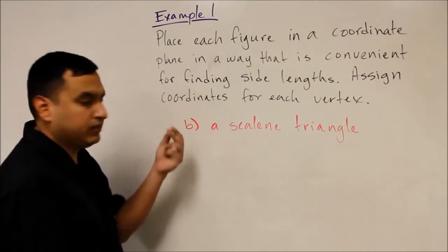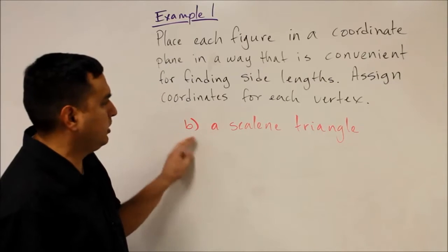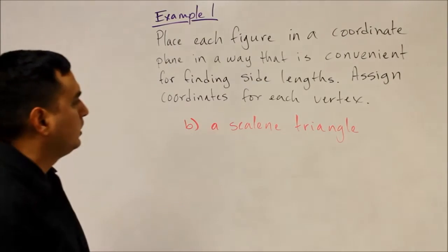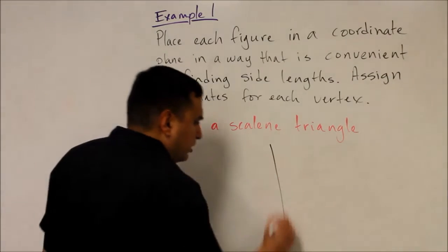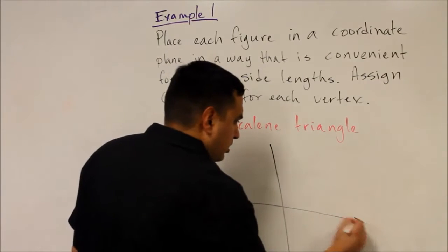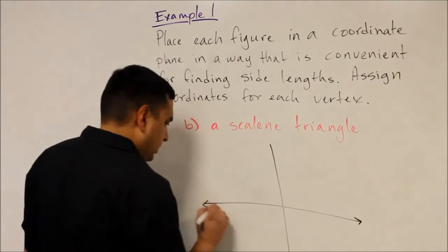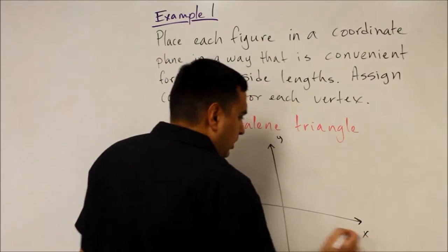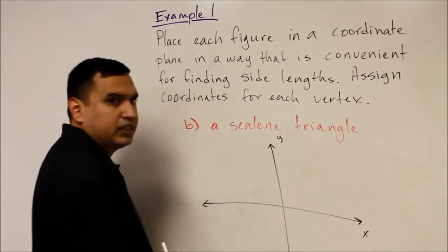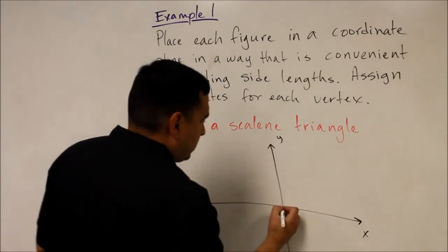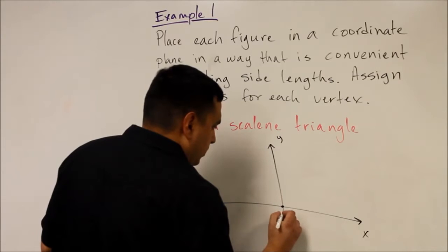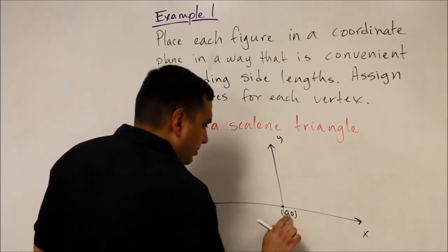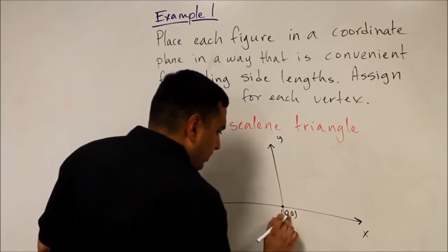Next is the same exercise with a scalene triangle. We'll start by drawing a coordinate plane. Like with the rectangle, we want to start with (0, 0) as one of the vertices if possible, and since there are no restrictions given, we'll go ahead and make (0, 0) one of the vertices.